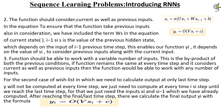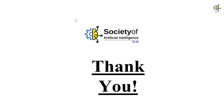For the second case of the wishlist, in which we need to calculate the output only at the last time step, Y will not be computed at every time step. We just need to compute the hidden state s_i at every time step until we reach the last time step, using the inputs x_i and x_{i-1} already computed. After reaching the final time step, we calculate the final output y_i with the formula y_i equals O(V*s_i + C). Society of Artificial Intelligence — thank you.